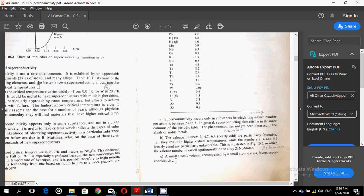Rule B: The valence numbers 3, 4.7, or 6.4, that is nearly odd, are particularly favorable. That is, they result in higher critical temperatures, while the numbers 2, 4, and 5.6 near the even are particularly unfavorable.